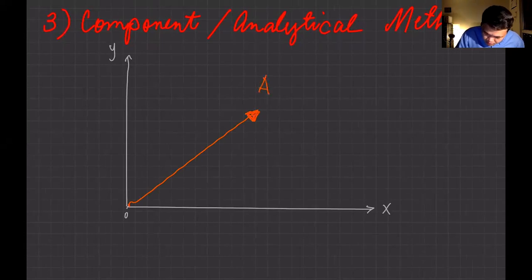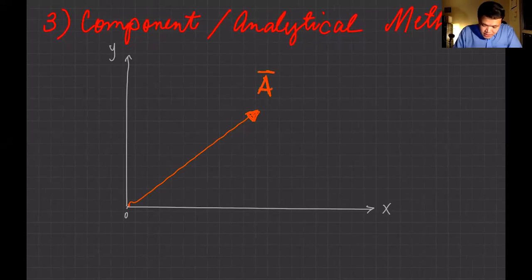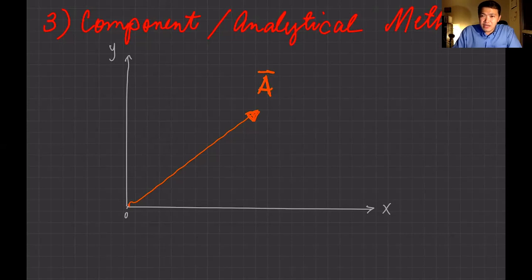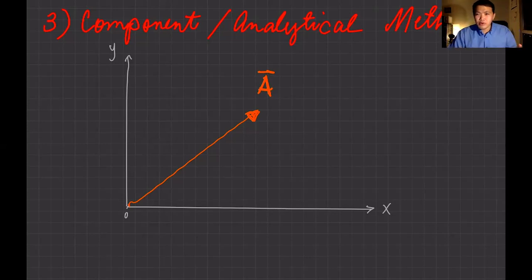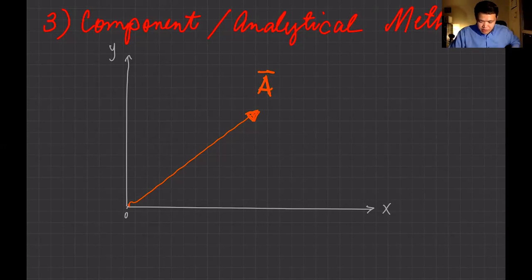So it moves in that direction — let's call it vector A. This vector A can be represented along its x-axis and along its y-axis: the x component and the y component. Let me draw the x and y components.